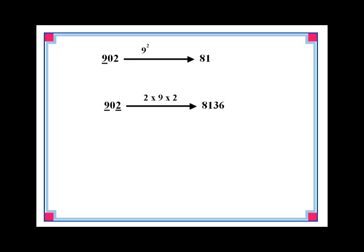In the next step we multiply all nonzero digits with each other and then multiply the result with two. So multiplying nine with two gives us 18 and multiplying it again with two gives us 36. Write 36 next to 81 as shown.